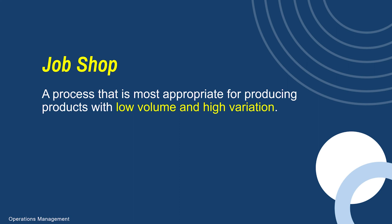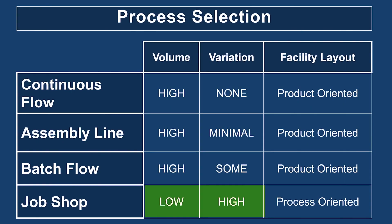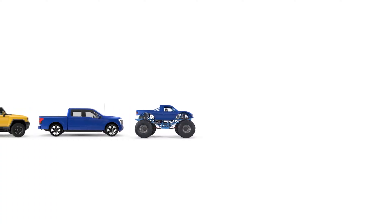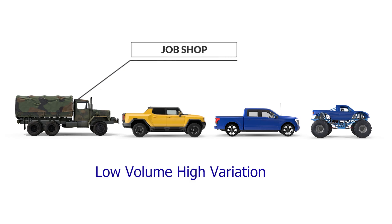Next, we have job shop. This is where you don't typically produce at high volume because your product variation is very high. Continuing the car analogy, this is where you produce custom-made, unique products for your customers. As you can imagine, producing in a job shop setting is much more expensive — this is why it costs more to get things customized, like custom jewelry, because modifications have to be made to your liking. If it's continuous flow, the exact same product is usually much less expensive to produce.